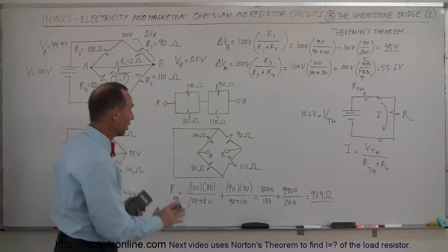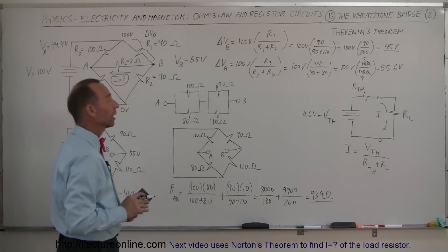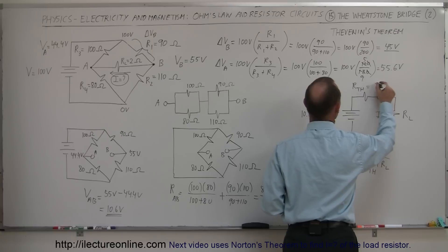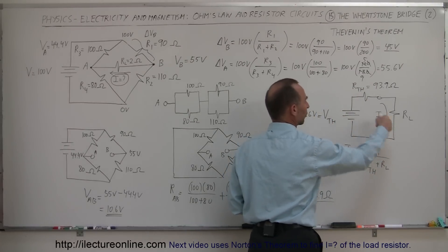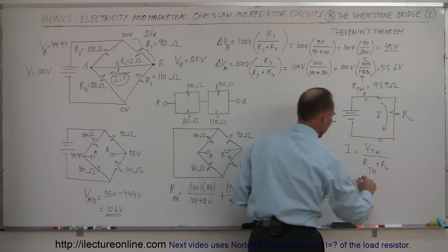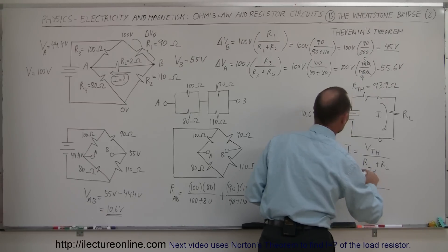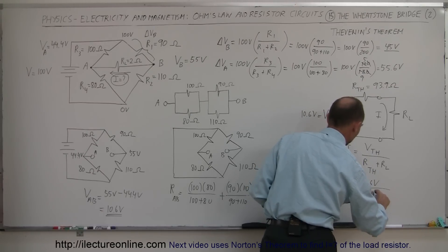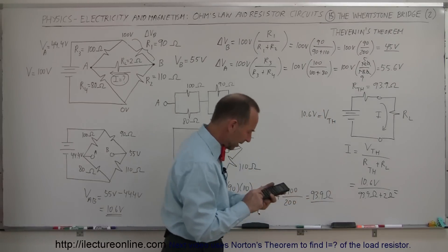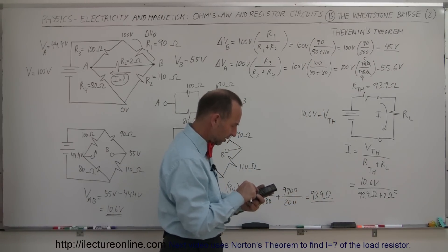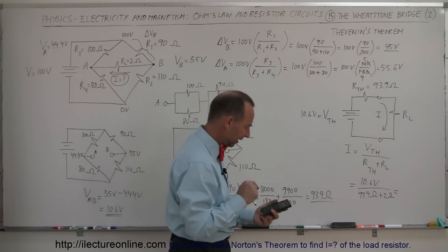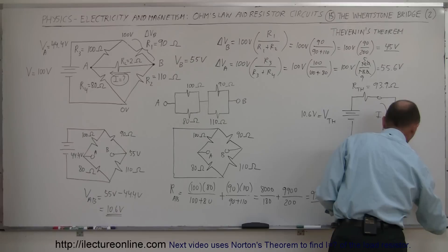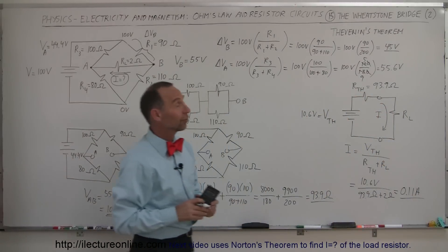That's the Thevenin equivalent resistance — 93.9 ohms — which goes into our equivalent circuit. Now all we have to do is plug in to find the current through the load resistor: I equals V_Thevenin divided by (R_Thevenin plus R_L) = 10.6 volts divided by (93.9 plus 2) ohms = 10.6 divided by 95.9, which equals 0.11 amps. That is the current through the load resistor.